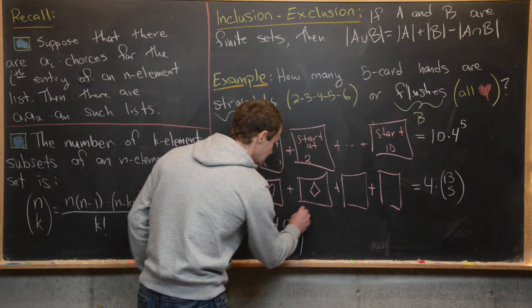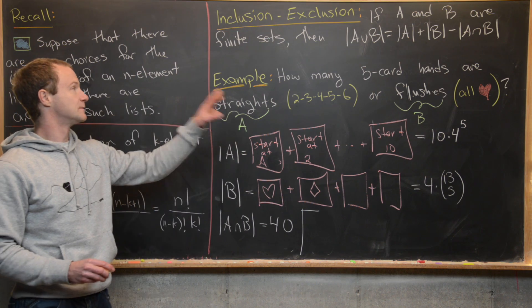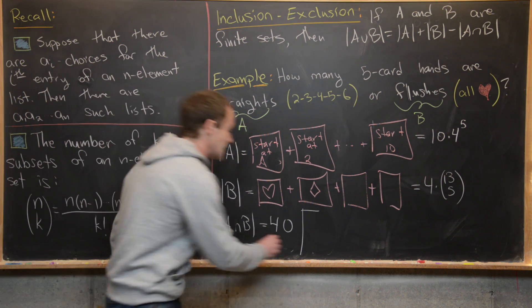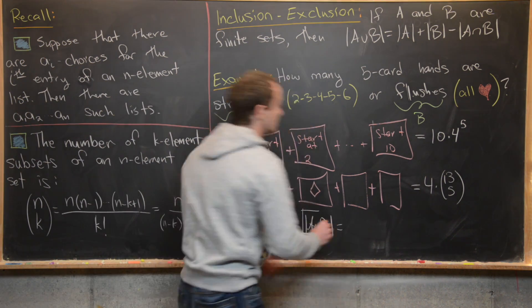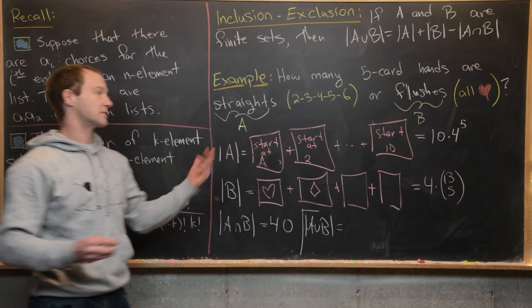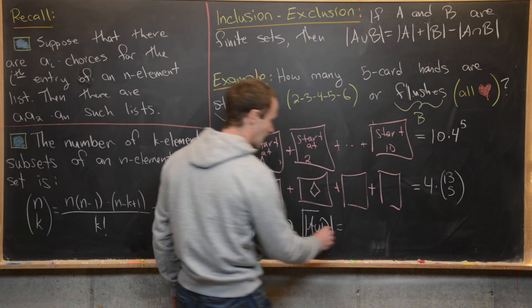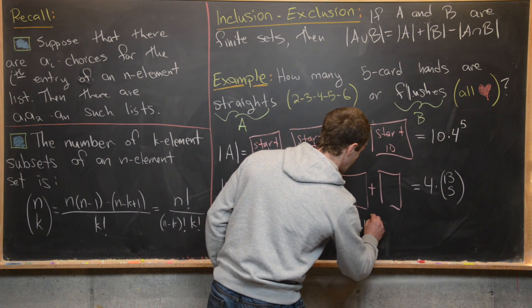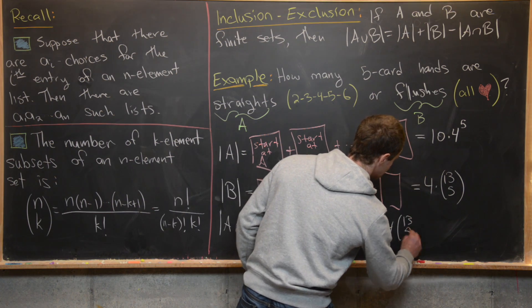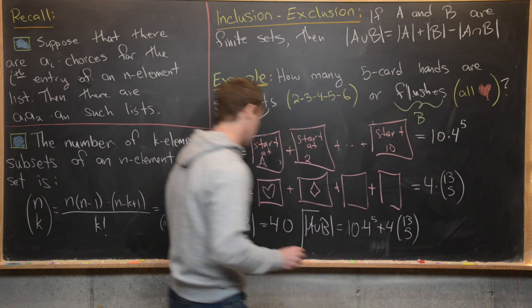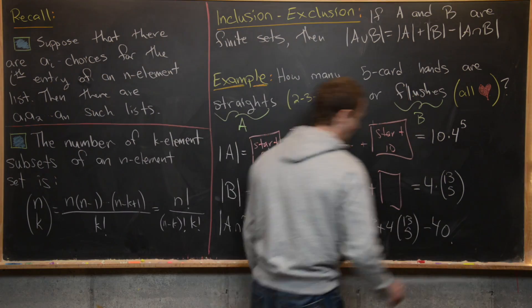The final answer using inclusion-exclusion is: 10 times 4 to the 5, plus 4 times 13 choose 5, minus 40. And that's a good place to stop.